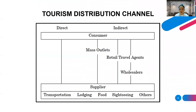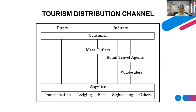Here is a figure of a tourism distribution channel. There are two ways of distributing a product: directly or indirectly. When using direct distribution, the product from the supplier — for example, transportation, lodging, food, sightseeing, etc. — is sold directly to the consumer.